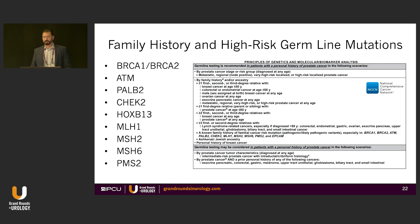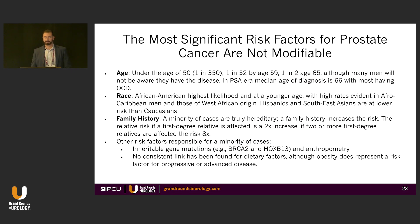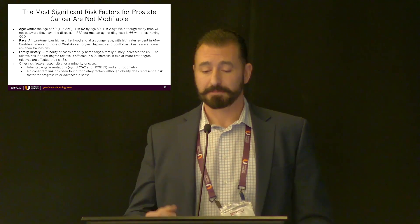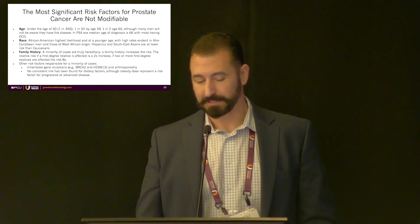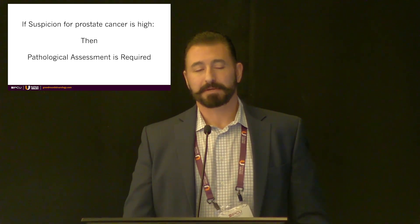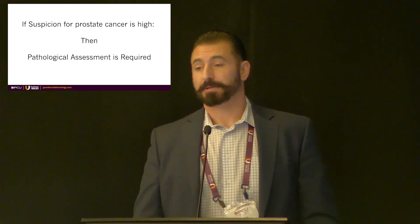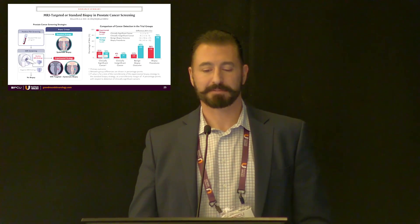Family history and germline mutations — the NCCN now says you should probably look, not only to inform what you're seeing but to help inform family members as well. There are many non-modifiable risk factors: age increases the probability of harboring prostate cancer; African Americans have a higher probability; family history increases the risk of penetrance, though not all these cancers are truly hereditary. The gold standard is still pathologic assessment, but we don't want to biopsy everybody.